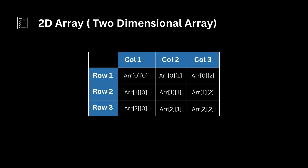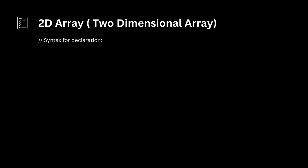A 2D array, or two-dimensional array, is an array of arrays. It can be thought of as a table or matrix with rows and columns. In C, a 2D array is declared as follows: data type, array name, row size, column size.